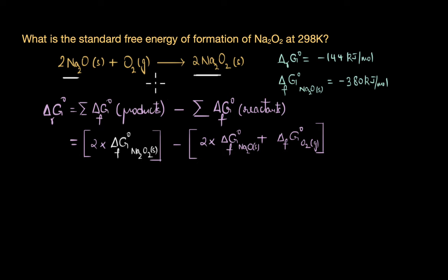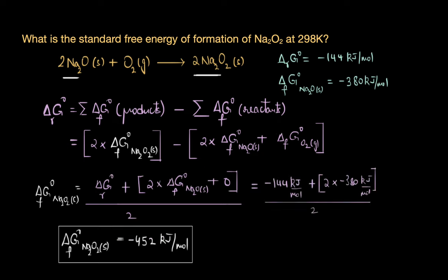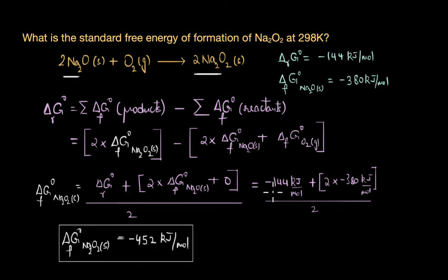Always remember to take into account the stoichiometric coefficients when calculating the standard Gibbs free energy change, enthalpy change, or entropy change. By rearranging the equation and substituting the given values, the standard free energy of formation of Na₂O₂ is −452 kJ/mol.